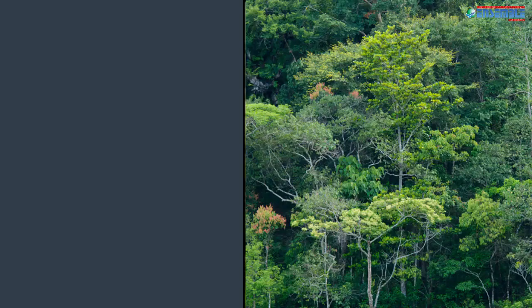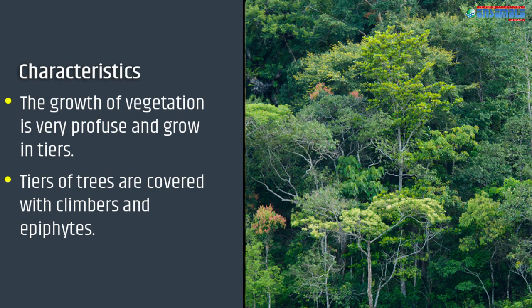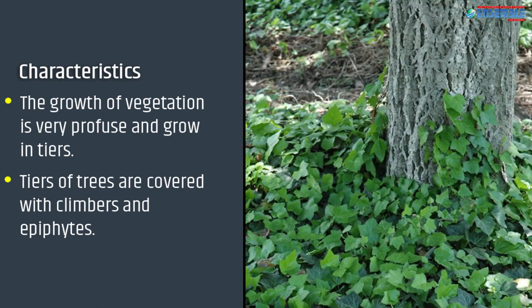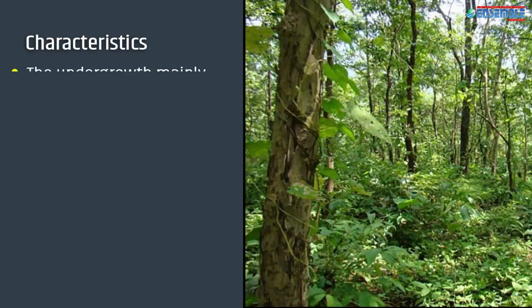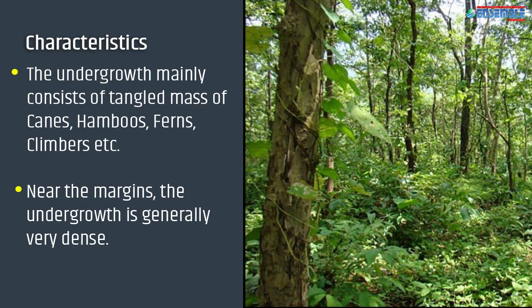The vegetation growth is so profuse that trees rise high, competing with one another and ultimately arranging themselves in the form of four stories or tiers. These tiers of trees are covered with climbers and epiphytes — plants that grow on another tree. The undergrowth mainly consists of tangled masses of canes, bamboos, ferns, and climbers.